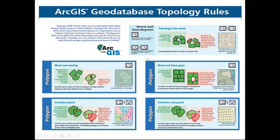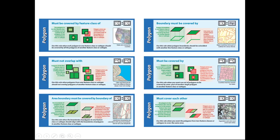Let's start at the top of this document where you can see some how-to's on how to read the diagrams. Some rules are going to have a single icon, meaning that rule is for a single dataset — it's only looking at the features inside of one dataset and how they behave. Other rules have two icons with a colon in between, meaning that rule is set up for two feature classes and how two datasets are behaving together. These icons also represent different geometries: this icon represents a polygon dataset, this one represents a point dataset, and there is also an icon that represents a line dataset.